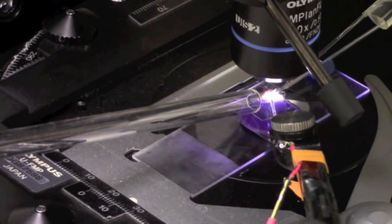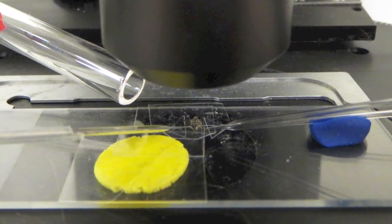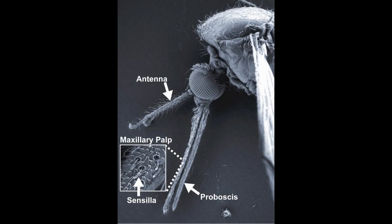We have a mosquito here under the high-powered microscope, and we're using electrodes which are inserted in the eye as a reference and into the sensillum on the maxillary palp, called the capitate peg sensillum, to record the activity of the neurons inside that sensillum.